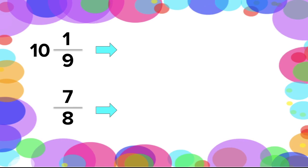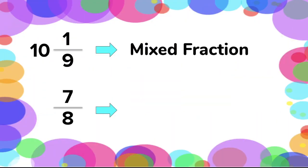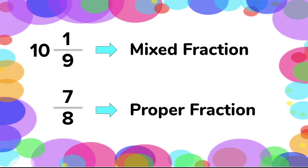For our last given, 7 over 8 — as we can see, our numerator is smaller or lesser than our denominator, so this is a proper fraction.